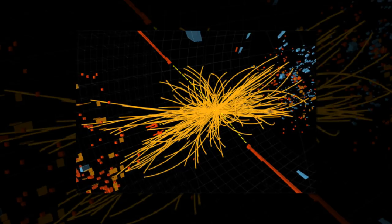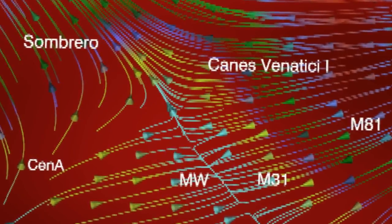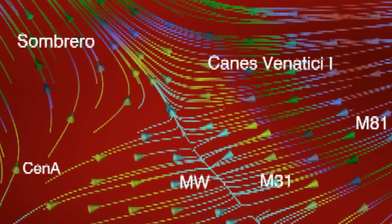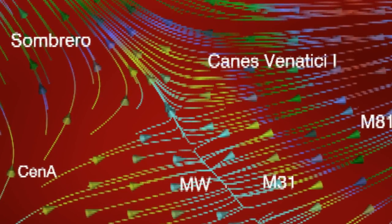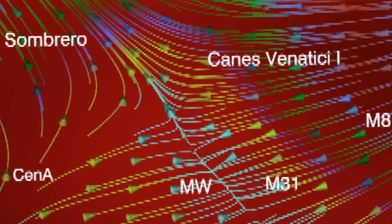This is the first time we have had observational verification that large filamentary superhighways are channeling dwarf galaxies across the cosmos along magnificent bridges of dark matter, Libeskind says.